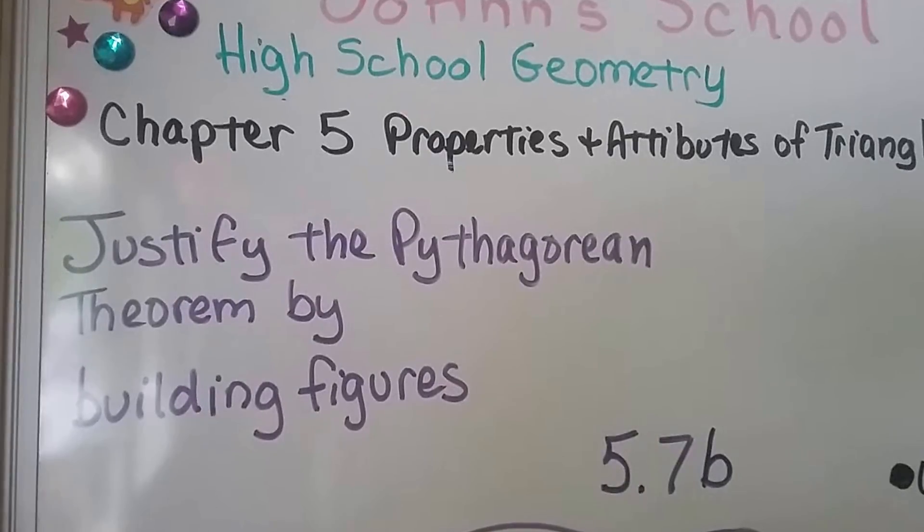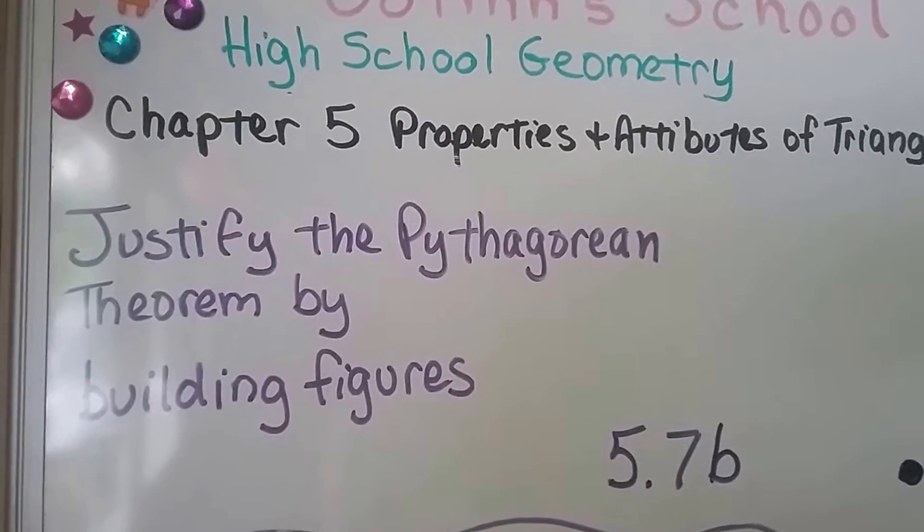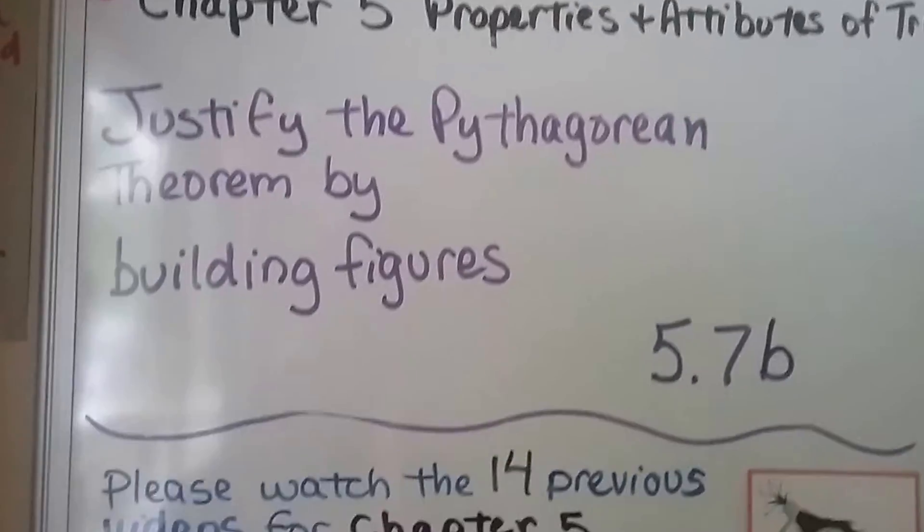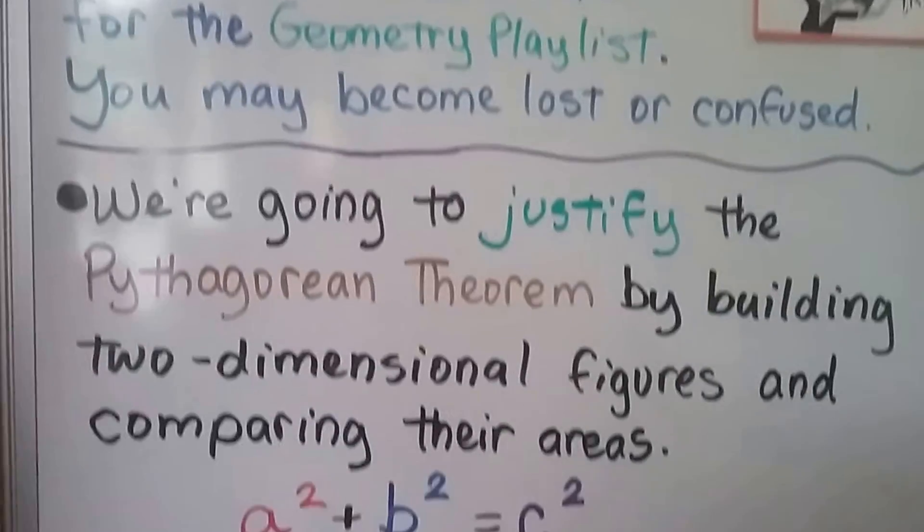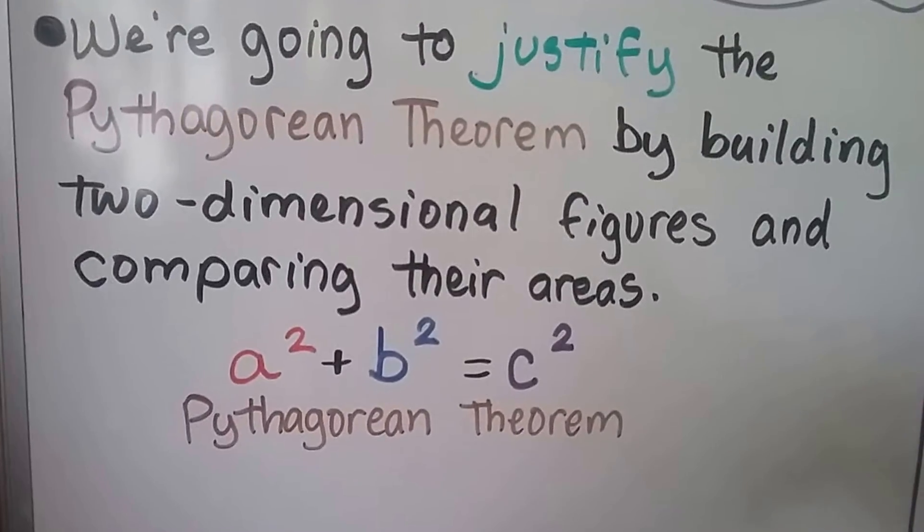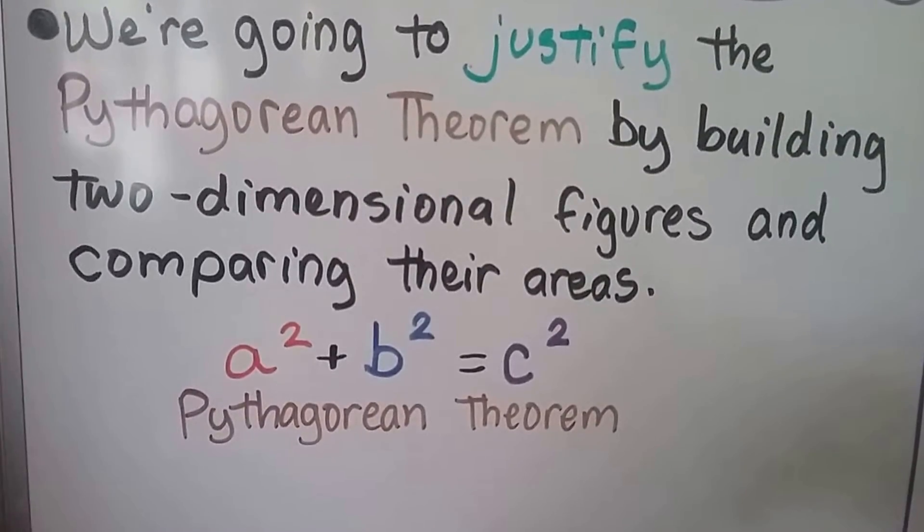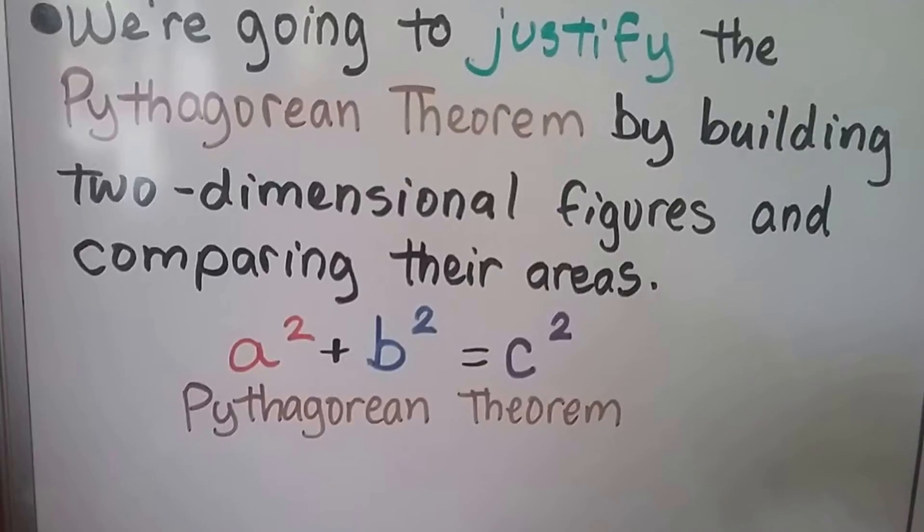We're at 5.7b now and we're going to justify the Pythagorean Theorem by building figures. We're up to 14 previous videos that are linked in the geometry playlist. So we're going to justify the Pythagorean Theorem by building two-dimensional figures and comparing their areas.